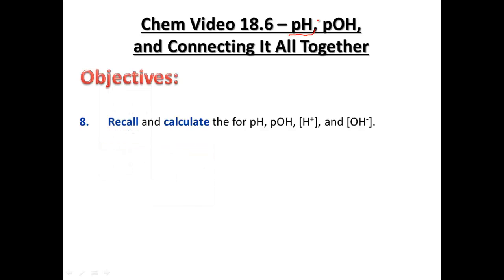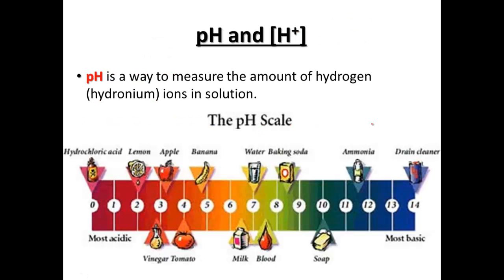So we're going to look at calculating pH and pOH along with the concentrations of hydroxide or hydrogen ions that we have in the solution. We've seen so far pH is the way to measure the amount of hydrogen H+ or hydronium H3O+ in solution, and we're going to be looking at the concentration.